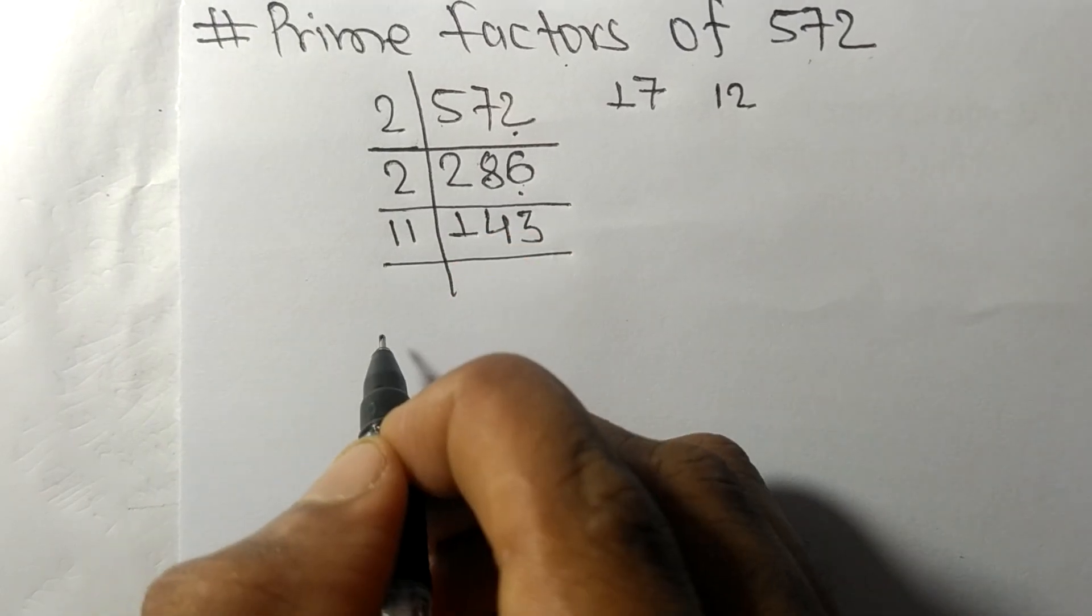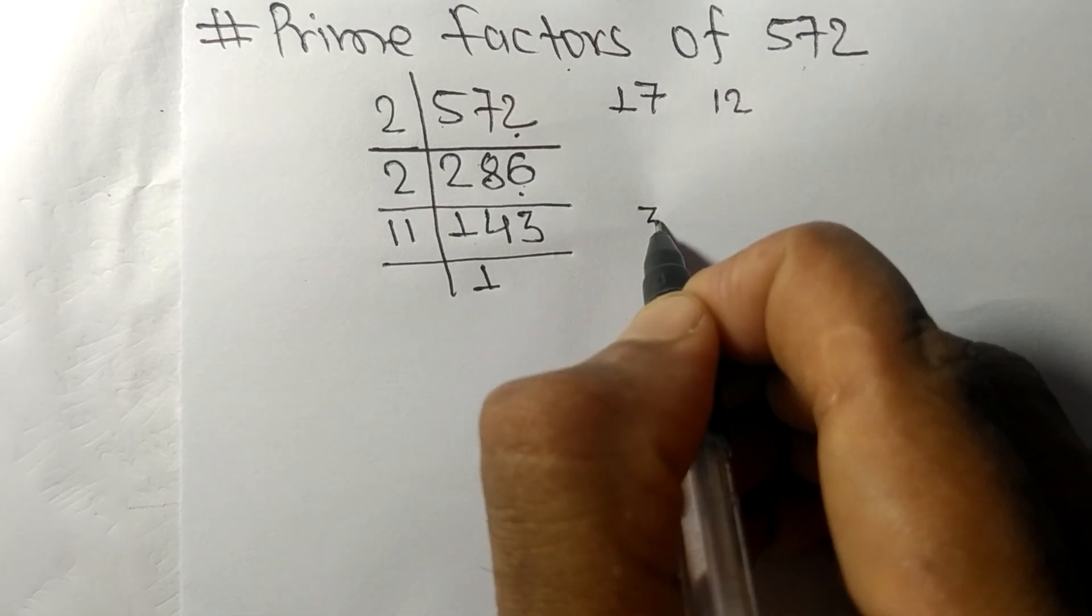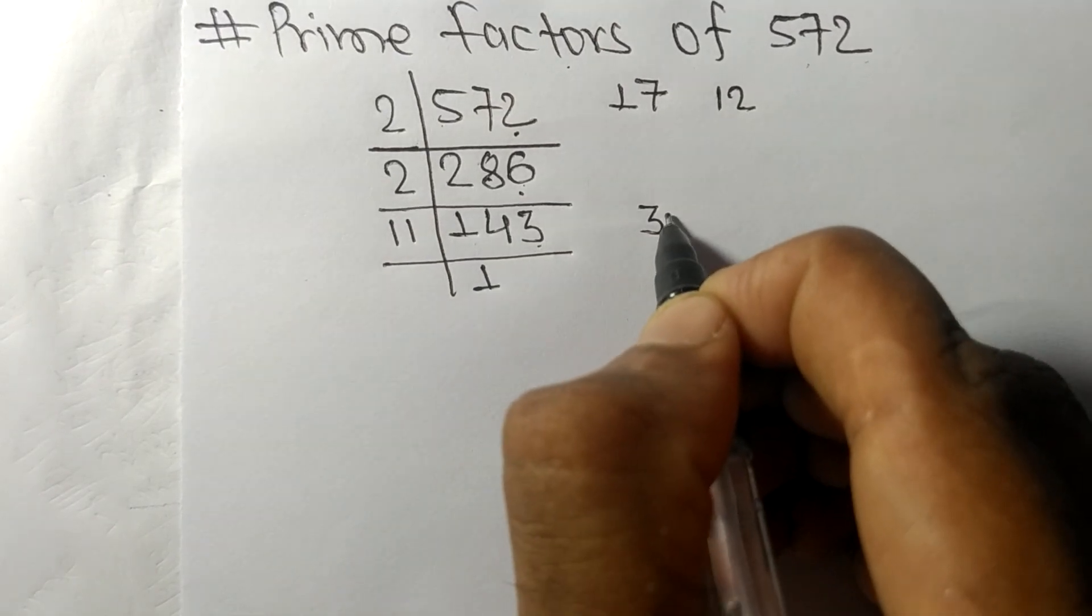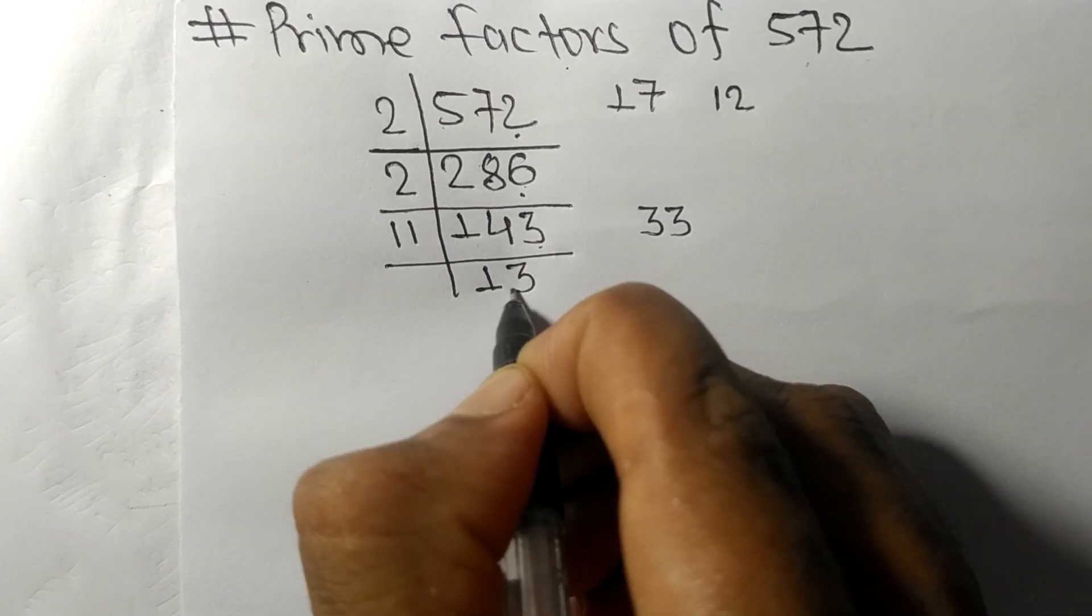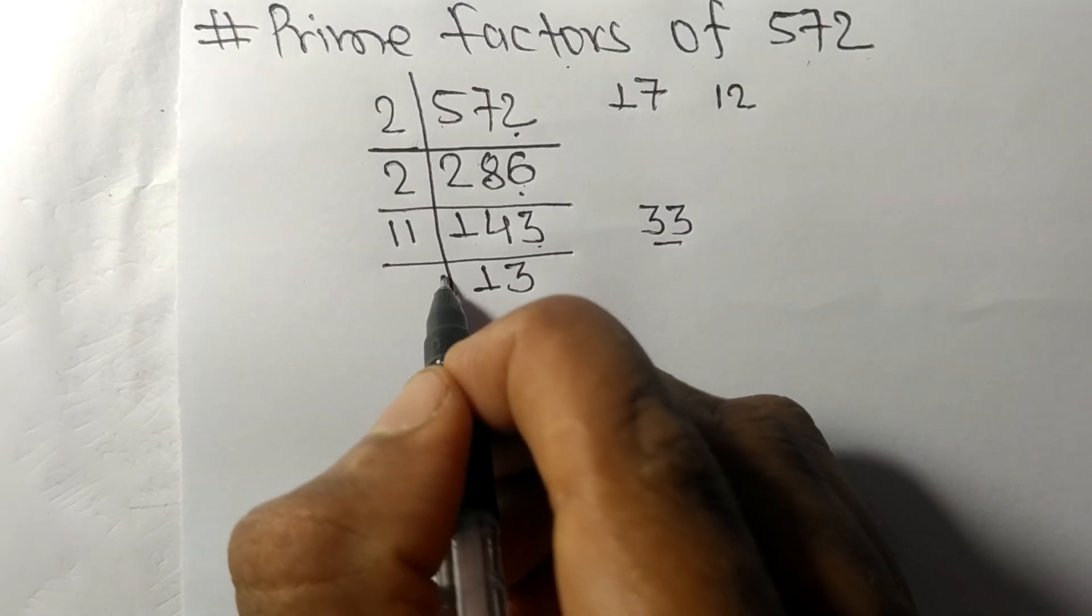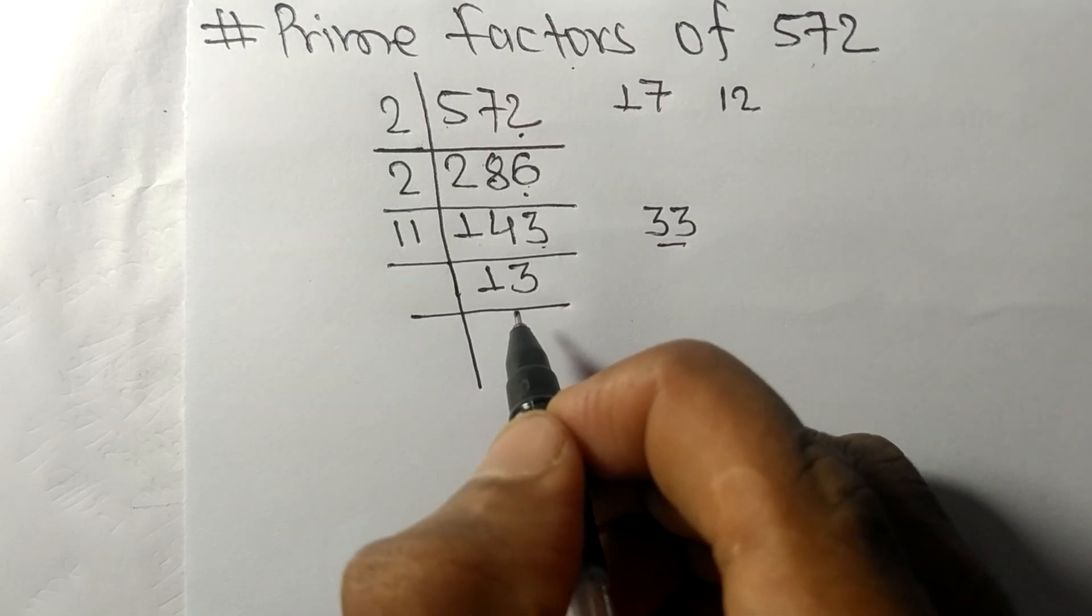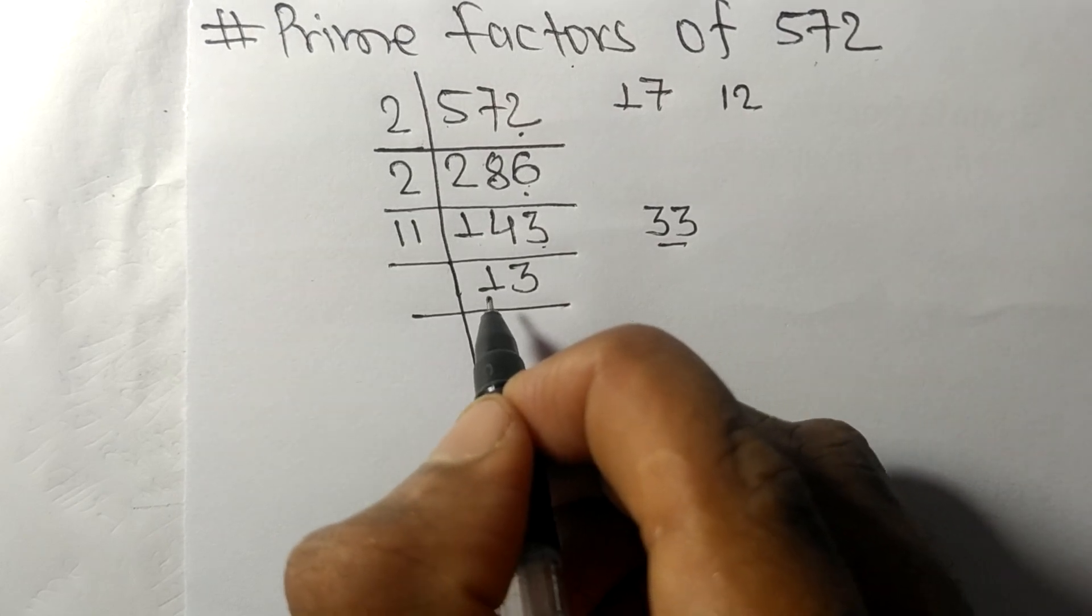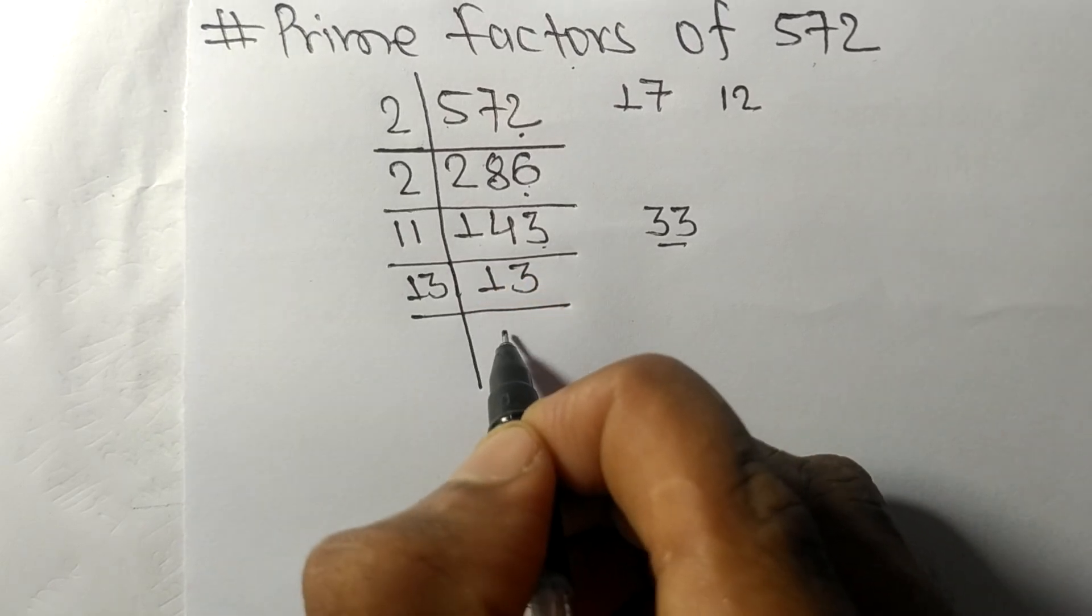So now we got here 13 which is our prime number, so it is divisible by 13 itself and we get here 1.